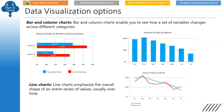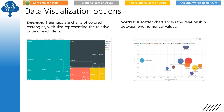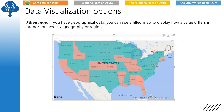There are some data visualization options you should remember and know when to use each. Bar and column charts show how a set of variables change across different categories. Line charts emphasize the overall shape of an entire series of values, usually over time. A matrix is a visual table structure that summarizes data. Key influencer charts display major contributors to a selected result or value. Treemaps are charts of colored rectangles where size represents the relative value — larger box means higher value. Scatter charts show the relationship between two numerical values. Filled map charts use geographical data to display how values differ in proportion across a geographical region.